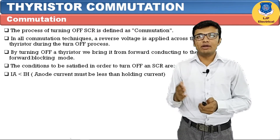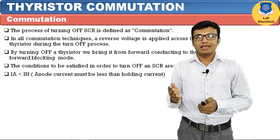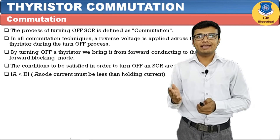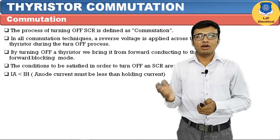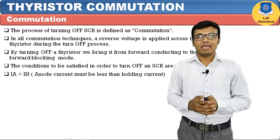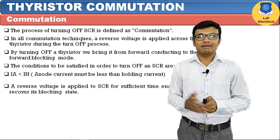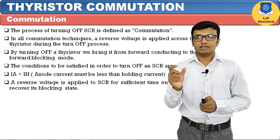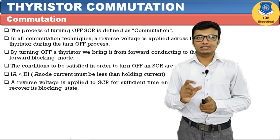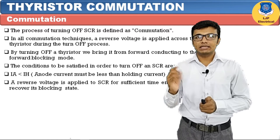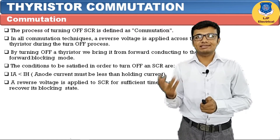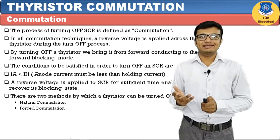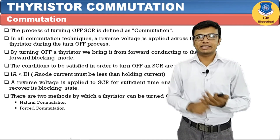There are two conditions which need to be satisfied to turn off the SCR. The first condition is that the value of anode current must be less than the holding current. The second condition is that we have to provide a reverse voltage across the SCR for a sufficient time duration so that it can recover its blocking state. There are two methods to turn off the SCR: natural commutation and forced commutation.